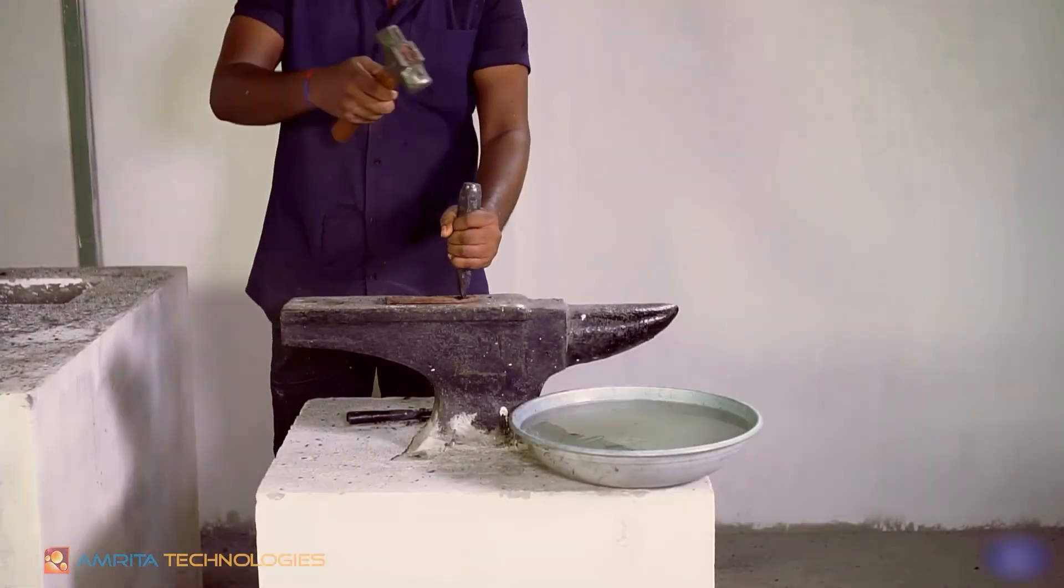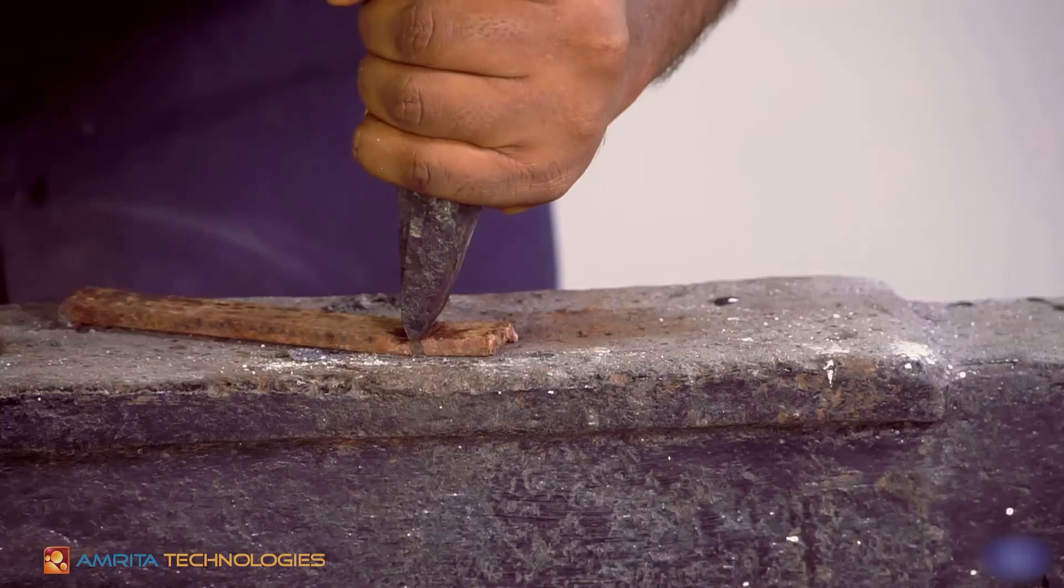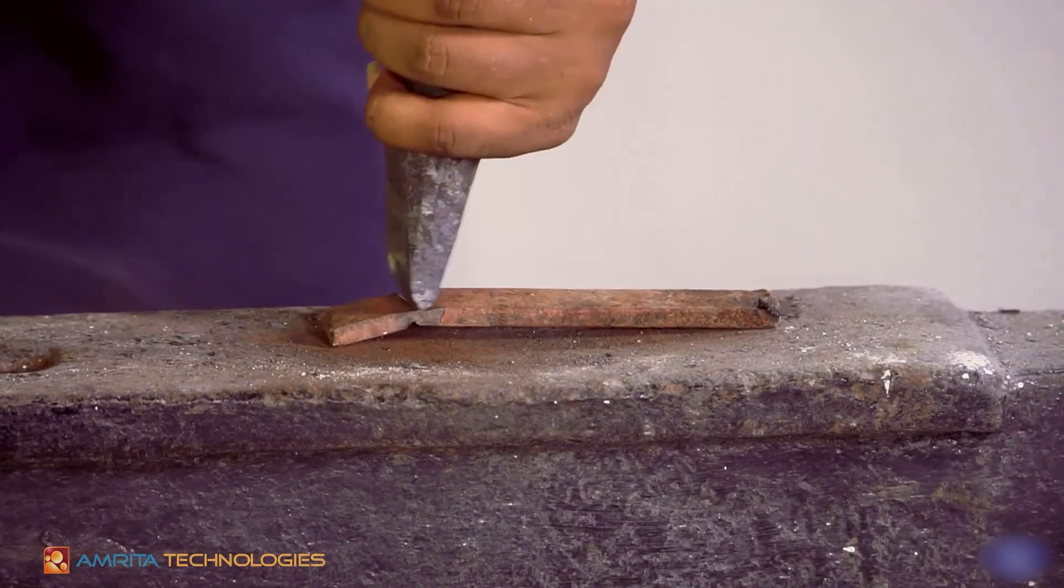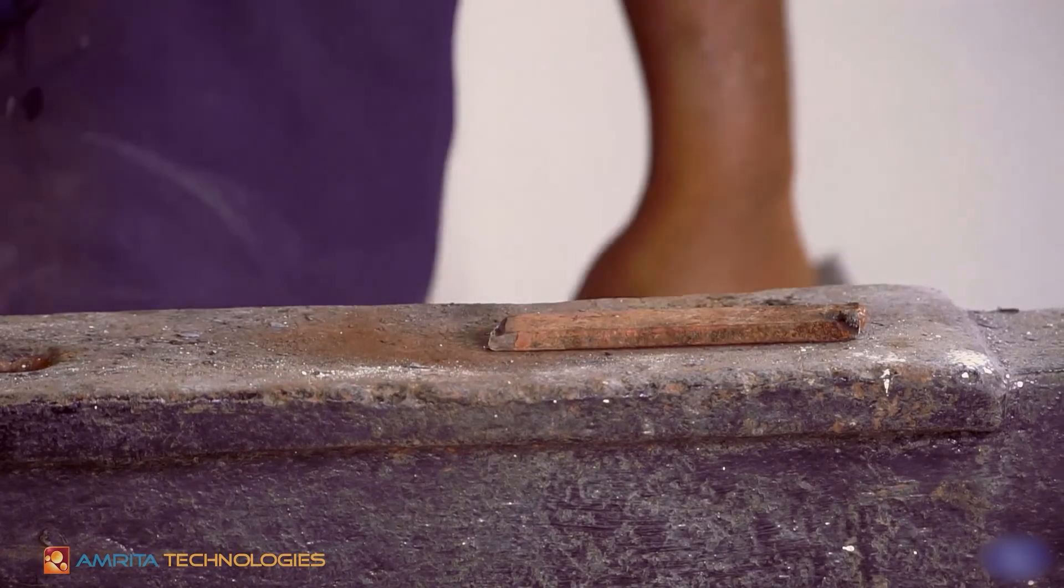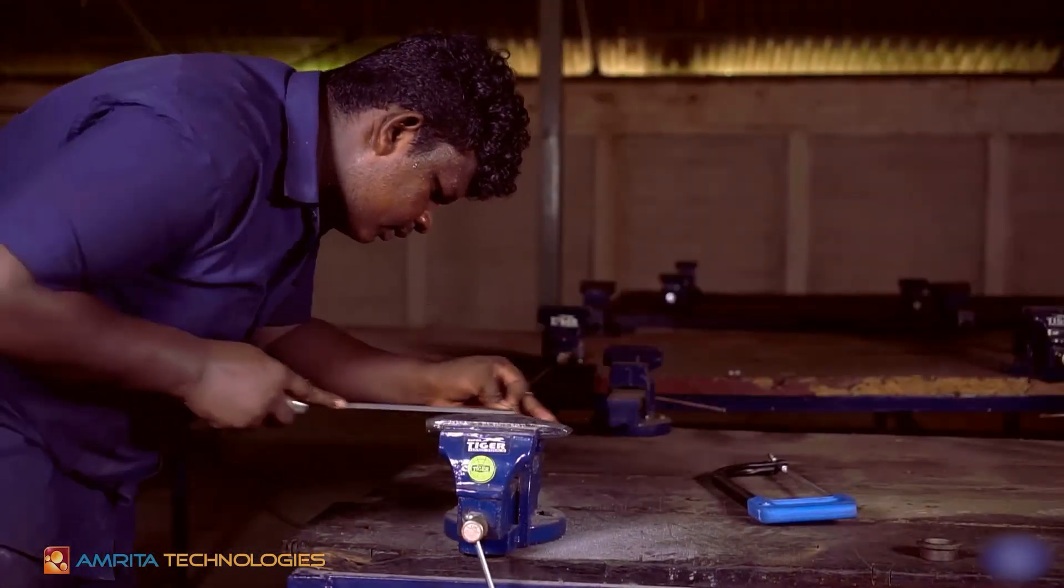Cut a piece of mild steel and check the hardening and tempering. File and finish the workpiece.